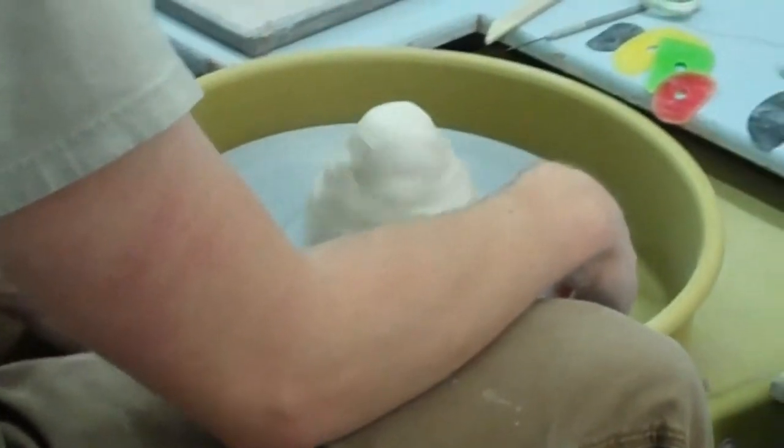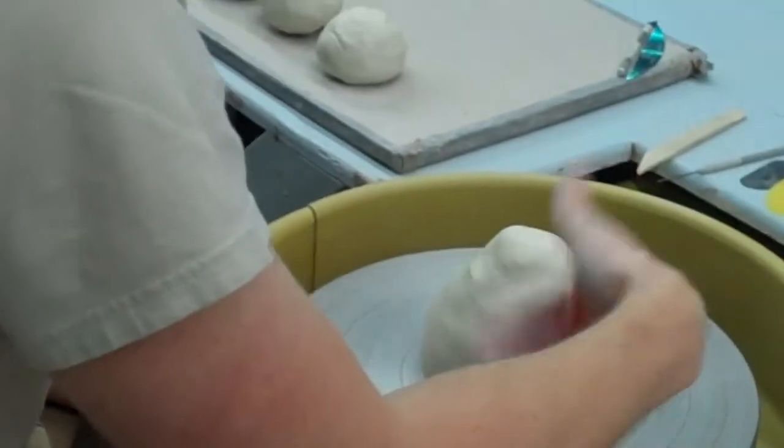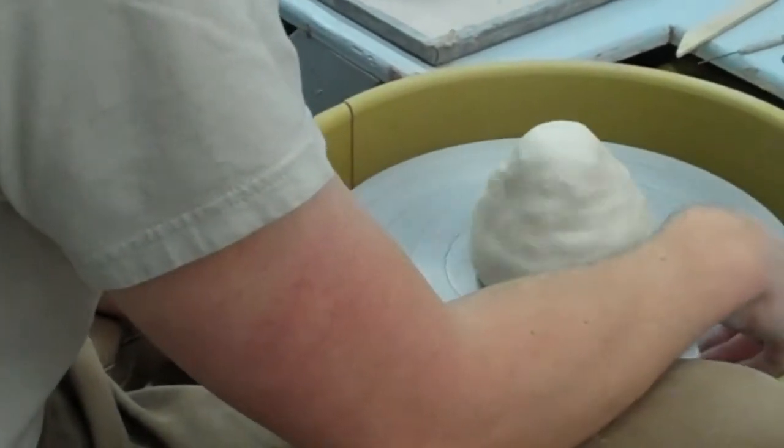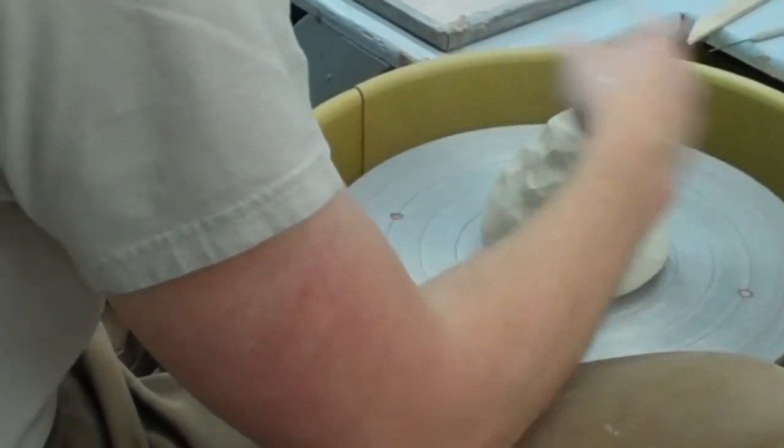If you are right-handed, your wheel should be turning counter-clockwise. If you're left-handed, your wheel should be turning clockwise.